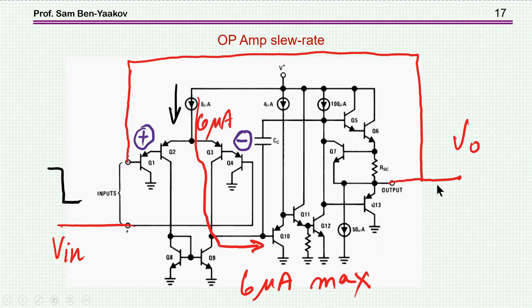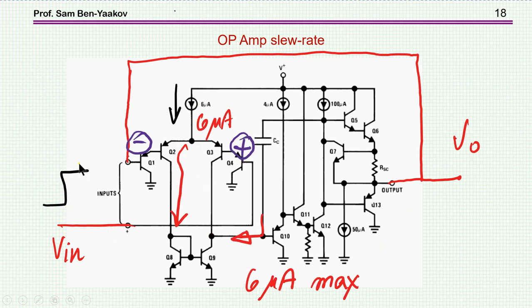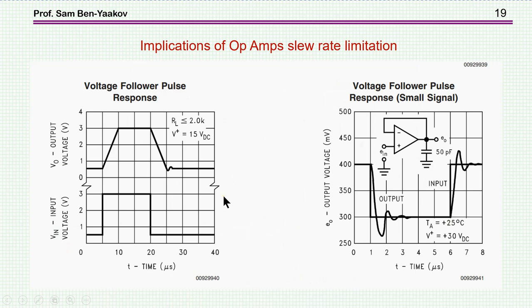The slew rate is caused by the current being limited to this source driving a large capacitor. For a positive step the output goes up but with a delay — there's a big difference. In this case the current mirror supplies current in the other direction, again limited to this current source. So this current source limits the current in both positive and negative directions, giving a slew rate limitation in both directions.